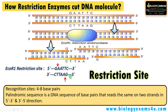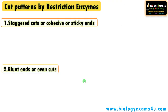The recognition site has these characteristics: it is often 4 to 8 base pairs long, and it is a palindromic sequence. For example, GAATTC reads the same from 5' to 3' on both strands — that is why these sequences are called palindromic. These sites are called recognition sites or restriction sites.